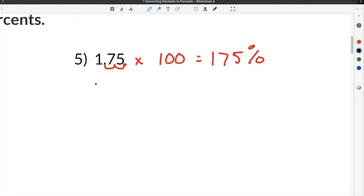We could also follow the shortcut of just taking our decimal point and moving it two times to the right to get a whole number. So it's going to be 175. And I know that it's a percent because we multiply times 100.